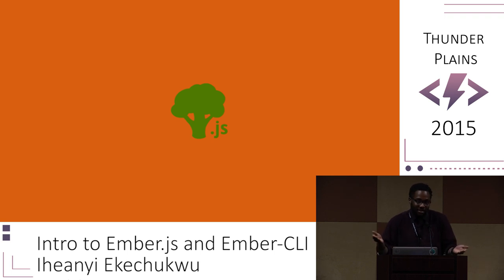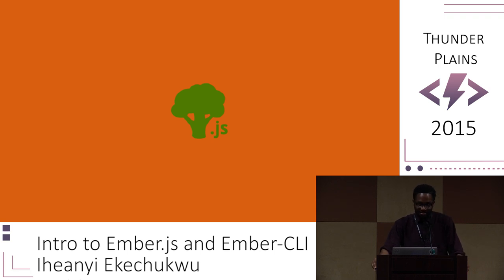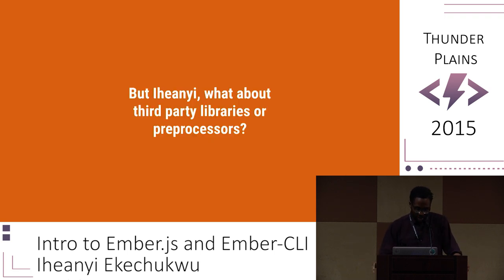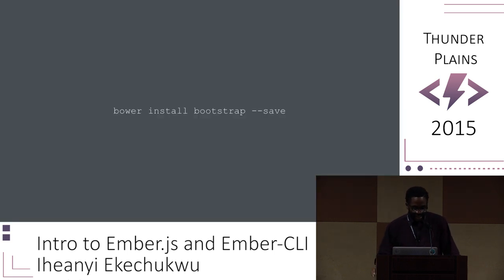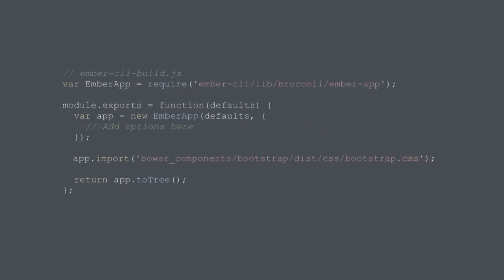That's important because you don't want to lose time to long build processes. For adding Bootstrap: first use Bower to install Bootstrap like in any project, then import your Bootstrap file in your Ember CLI build.js file, and you're done. Under the hood, Broccoli adds the third-party dependency to a vendor.css file, which then gets imported into your Ember application.